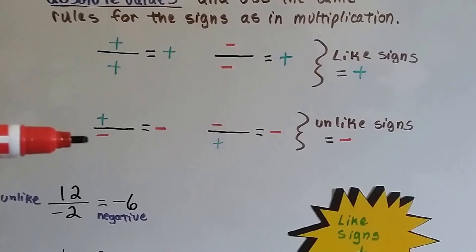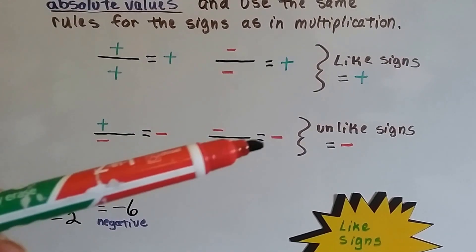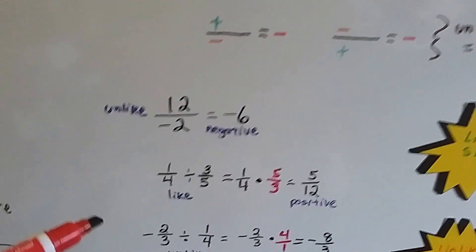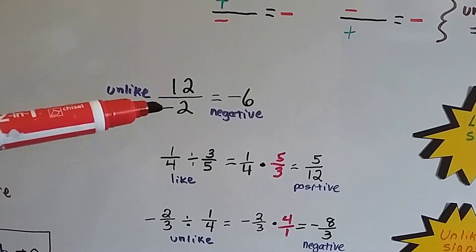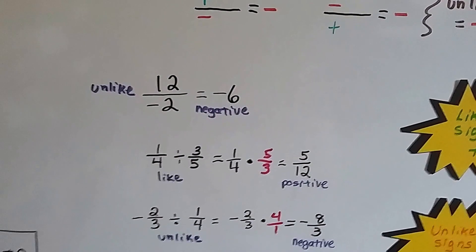When we have a positive over a negative, we're going to have a negative. And if we have a negative over a positive, we're going to have a negative because they're unlike signs. We've got a positive 12 over a negative 2. Those are unlike, so we're going to have a negative 6 for an answer.